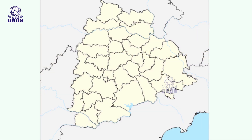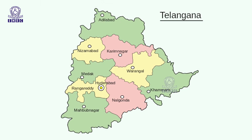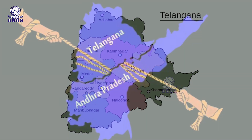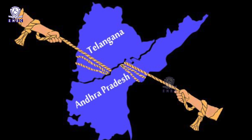Telangana state spread over 112,077 square kilometers and comprised 10 districts namely Adilabad, Nizamabad, Karimnagar, Medak, Khammam, Warangal, Nalgonda, Mahabubnagar and Hyderabad, with 464 mandals as per the AP Reorganization Act 2014.